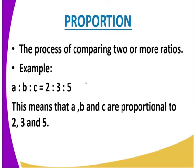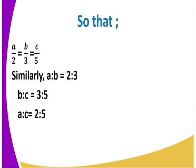Proportion is a process of comparing two or more ratios. For example, if A is to B is to C equals 2 is to 3 is to 5, this means A, B, and C are proportional to 2, 3, and 5 respectively. So A is represented by 2, B by 3, and C by 5. The ratio of A to B is 2 to 3, B to C is 3 to 5, and A to C is 2 to 5.